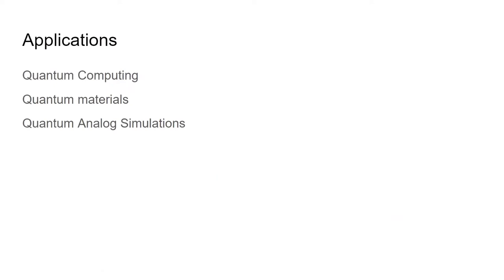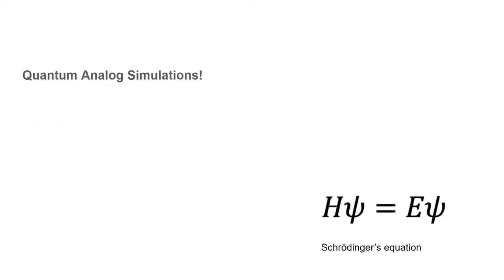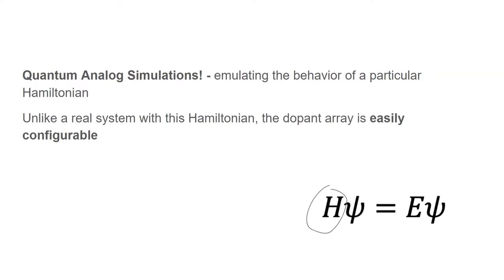There are a lot of applications of these dopant array systems, in particular in quantum computing, quantum materials, and quantum analog simulations. I want to focus my attention today on quantum analog simulations, which aim to emulate the behavior of a particular Hamiltonian. This is important because unlike a real system with a similar or perhaps the same Hamiltonian, the dopant array system is very configurable. We can easily build its phase diagram by adjusting the parameters a lot more easily than with a real system.